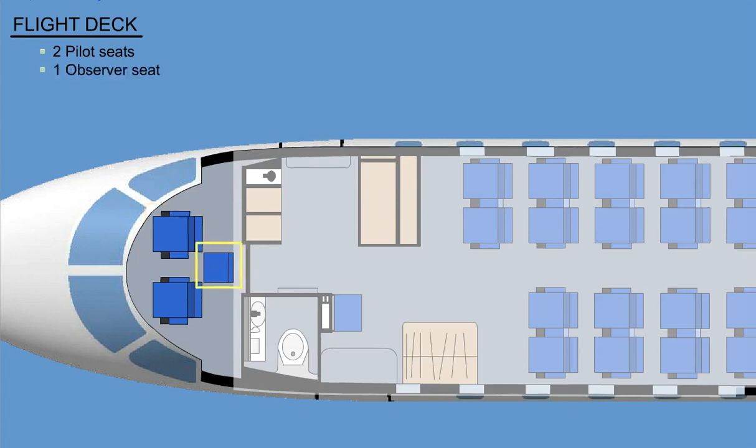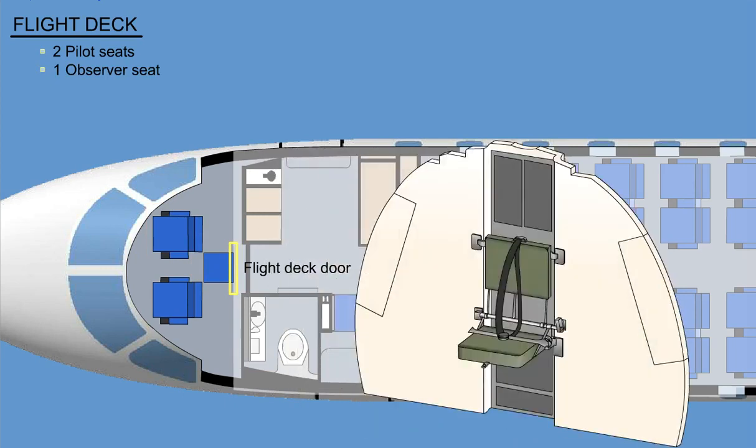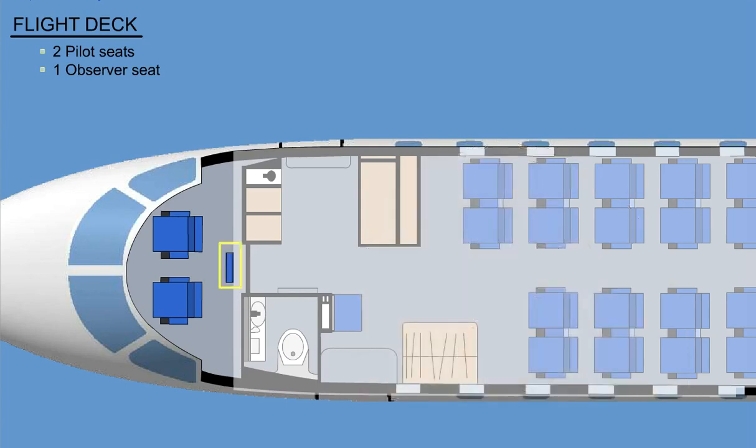A foldable seat positioned just in front of the flight deck door is intended for an optional observer. When it is not used, the seat is stowed behind the commander seat against the flight deck partition.